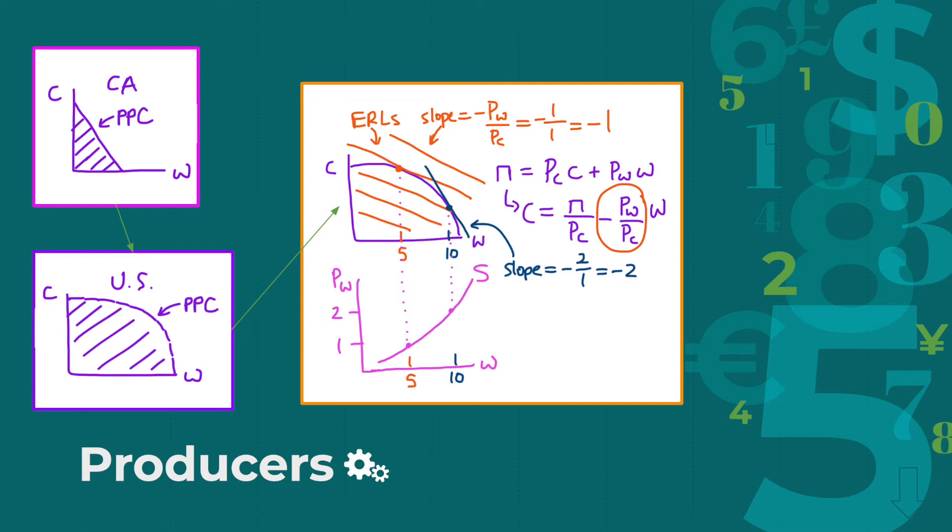We can also see that California has a greater capacity for producing corn, since it can produce a greater maximum amount of corn than it can wheat. Now, we can take similar graphs for all 50 states, where some states will have a steeper slope, meaning they're better at producing corn, and some will have a flatter slope, indicating they're better at producing wheat.